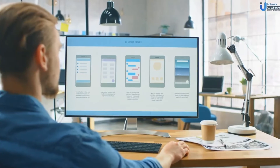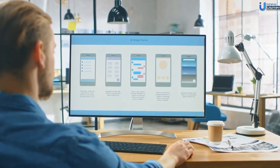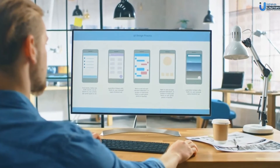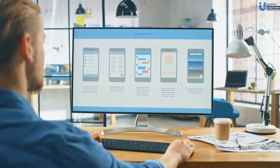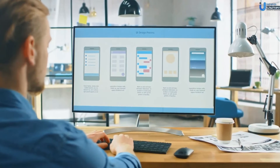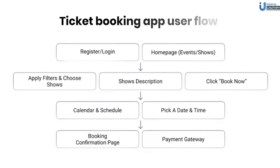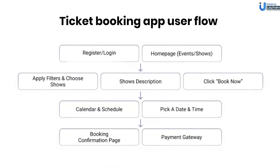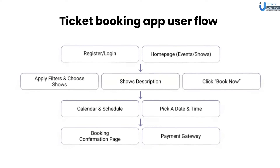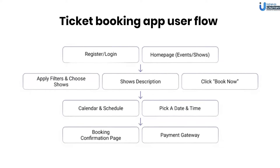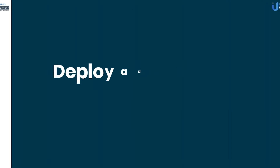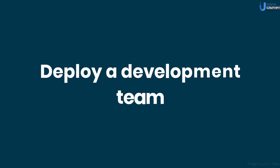The user flow diagram should illustrate what users will see on the screen and the actions they have to perform. This is the user flow of a ticket booking app. Once the user flow is created, you need to deploy a development team and start the app development.